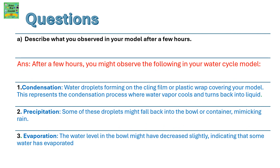These are a few questions in relation to the water cycle model. Describe what you observed in your model after a few hours. The observations could be: condensation — water droplets forming on the cling film or plastic wrap covering your model — this represents the condensation process where water vapour cools and turns back into liquid; precipitation — some of these droplets might fall back into the bowl, mimicking rain; and evaporation — the water level in the bowl might have decreased slightly, indicating that some water has evaporated.